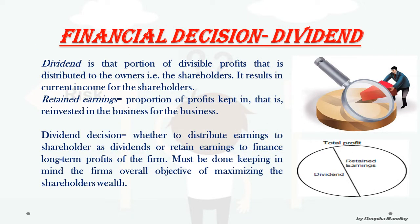Before discussing dividend decisions, we should be aware of two important terms: dividends and retained earnings. Dividends are the portion of divisible profit that is distributed to the owners, that is the shareholders. Dividends are given only when the company has earned profit — shareholders get their return only when the company has earned profit, not in cases of loss. Retained earnings are the proportion of profits which are kept in, that is reinvested in the business, for the purpose of business growth, expansion, or reinvestment.